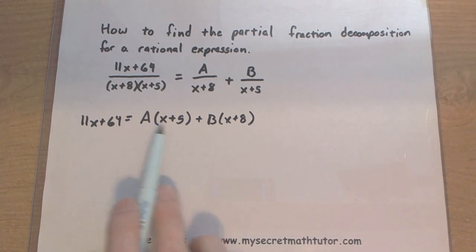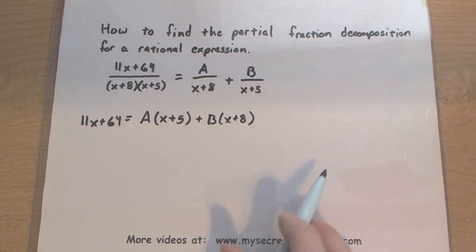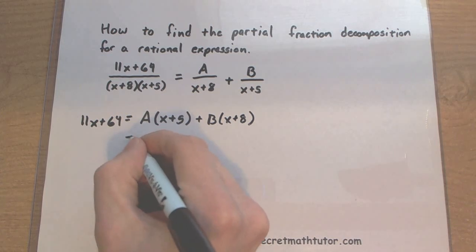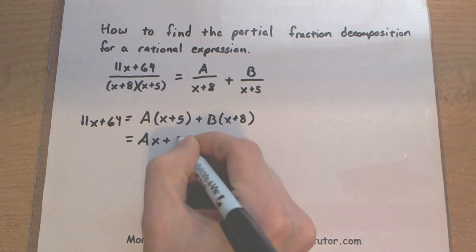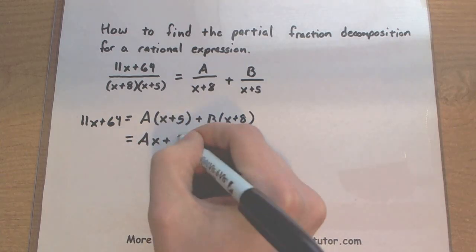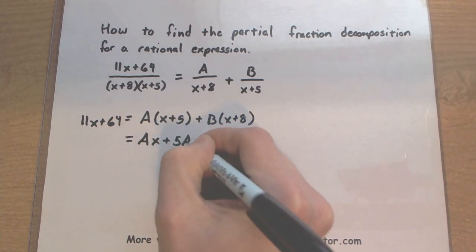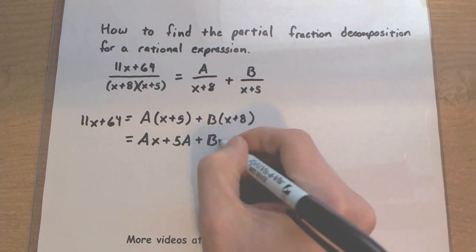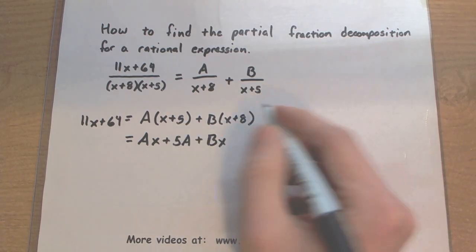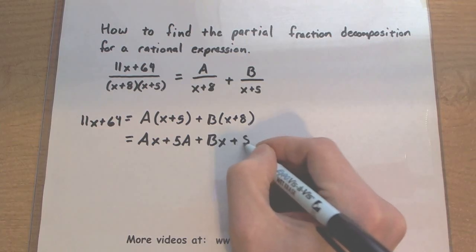This is going to help us figure out our A and B. I want to start making some comparisons, but I got some things trapped inside parentheses. Let's start distributing to free things up. A times x is Ax, A times 5 is 5A, B times x is Bx, and B times 8 is 8B.